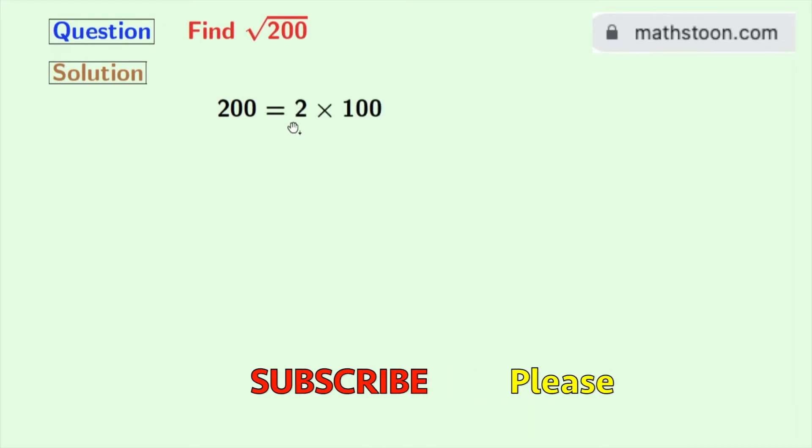Now see that 200 can be written as 2 times 100. Here, look that 100 is a perfect square which is a square of 10.